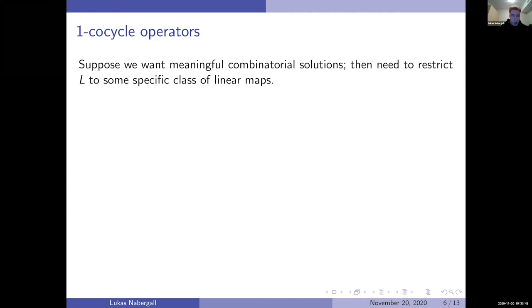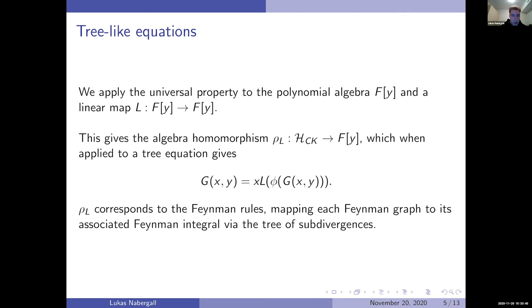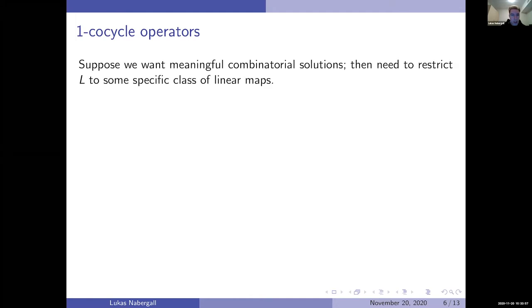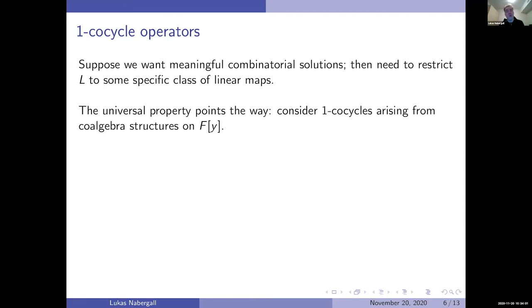Working with any arbitrary linear map isn't necessarily going to give you something interesting. But the universal property points the way to what would be interesting: one-cocycles arising from coalgebra structures on the polynomial algebra F[y].